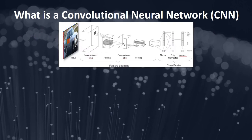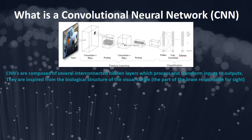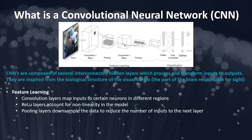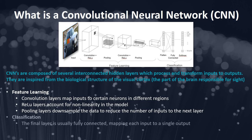So what is a convolutional neural network? Convolutional neural networks, or CNNs, are composed of several interconnected hidden layers which process and transform inputs to outputs. They are inspired from the biological structure of the visual cortex. Convolution layers perform mathematical convolution of different filters over each input image — different filters emphasize different features, such as color channels or edges. ReLU layers, which stands for Rectified Linear Units, are activation functions that introduce non-linearity into the model. Pooling layers downsample the data between layers to reduce the number of inputs to the next layer, so that we can perform a single classification as the final output using a fully connected layer.